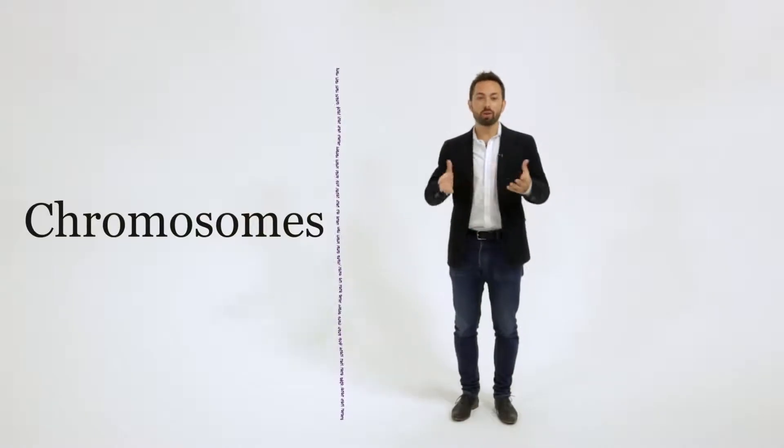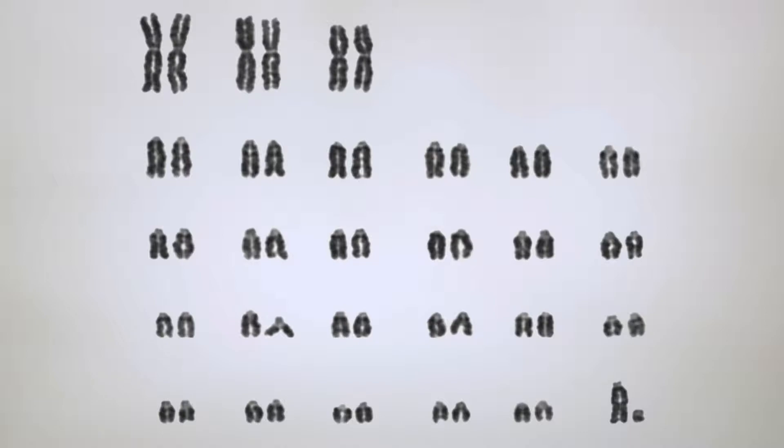DNA is split into 46 pieces, each 3 to 4 centimeters long, called chromosomes. Now normally we think of chromosomes as looking like this, but they only take that form when a cell is ready to divide.